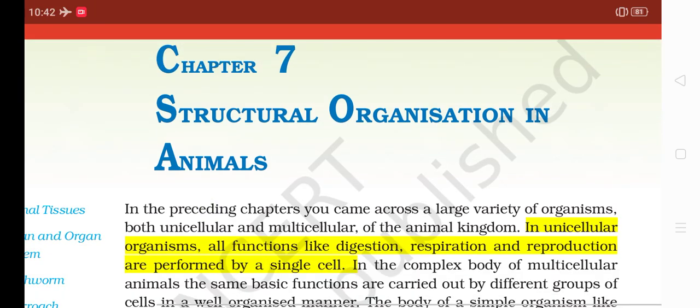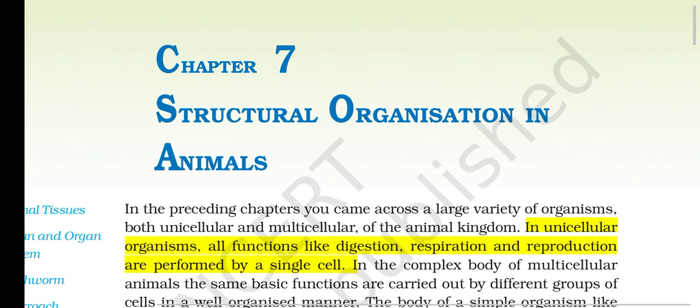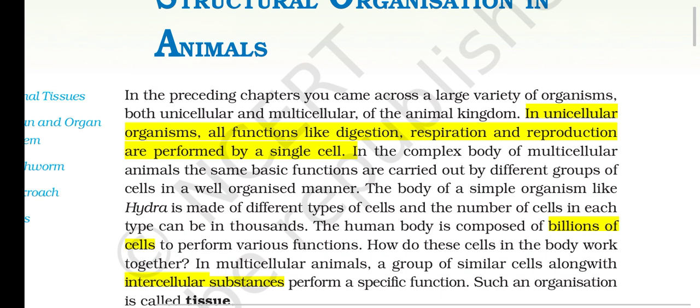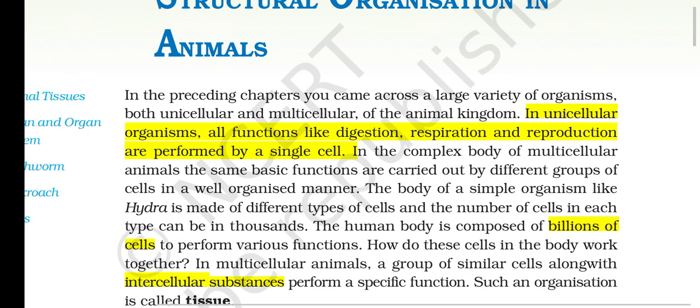Welcome to NCERT audiobook chapter 7: Structural Organisation in Animals. In the preceding chapters you came across a large variety of organisms, both unicellular and multicellular, of the animal kingdom. In unicellular organisms all functions like digestion, respiration and reproduction are performed by a single cell. In the complex body of multicellular animals the same basic functions are carried out by different groups of cells in a well-organized manner.